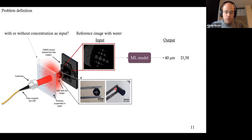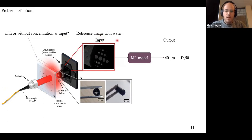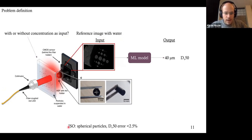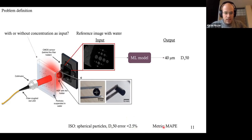Another discussion was how to correct for background lighting conditions. We took a reference image with water only — without particles — and used this to correct for the background. The ISO standard says for such a device measuring spherical particles, the error for d50 should be less than 2.5%. This will be our benchmark. Our metric for this case is mean absolute percentage error, so we can compare directly with the benchmark.